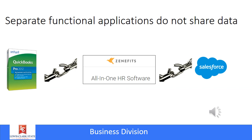Separate functional applications do not usually share data with one another, and that creates a problem not only in large businesses but also small businesses as well. We refer to that as information silos — when information is stored in one place and it's not shared in another. The problems with this are numerous. For instance, if the same customer data exists in both the accounting and the customer relationship management system, and a customer's address changes, it might get updated in one place but not another. Information silos can create large problems for businesses.